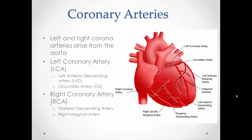The coronary arteries are important for providing the heart with oxygen. The muscle of the heart is too thick for simple diffusion of oxygen from the ventricles or atriums into the muscle fiber, so we need a dedicated circulatory system for the heart. The left and right coronary arteries arise from the aorta, just at its base, partly underneath the pulmonary artery.